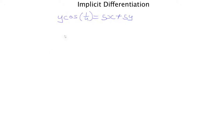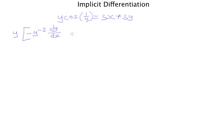All right, let's start. First we want to do the product rule. Product rule says: hold the first term, so I keep the y, and differentiate the second term, which is cos(1/y). This requires the chain rule, so I differentiate the inside first. 1/y is y to the minus 1, and differentiating that gives minus y to the minus 2. In implicit differentiation, whenever you differentiate y, you have to add dy/dx at the end.